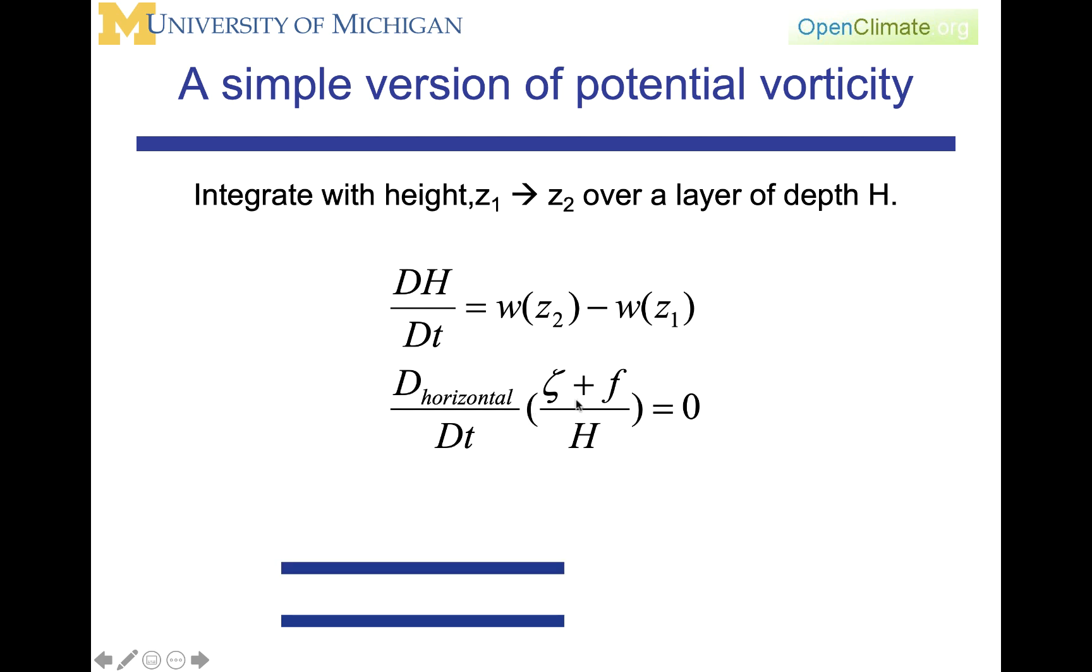Hence, we will be able to write the whole equation by combining everything on the left-hand side of d/dt, where we're explicitly stating here we're looking at the horizontal derivatives. We're looking at the xy plane of (zeta + f)/h is equal to zero.